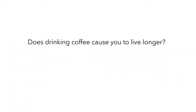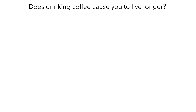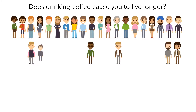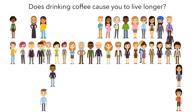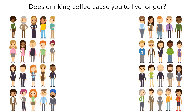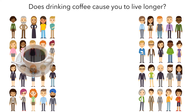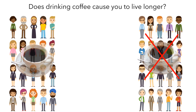But there is an alternative method we could use to answer the second research question. In order to investigate cause and effect, we need to use random assignment. First, we'd recruit a bunch of volunteers, then randomly assign them to one of two conditions. The first group would be forced to drink two cups of coffee every day for the rest of their lives. The second group would be prevented from drinking any coffee for the rest of their lives. Then we'd measure their age when they died. Let's say the coffee drinkers lived an average of 76.2 years and the non-drinkers lived an average of 74.7 years — so again, the coffee drinkers lived longer.